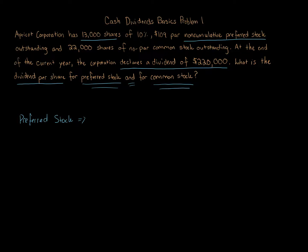We start with preferred stock. We calculate that. What we take is the par amount, $109. We multiply that by the percentage, the 10%. So $109 times 10%, that equals $10.90. We're then going to multiply the $10.90 per share by the number of preferred shares outstanding, which we're told is 13,000 shares. So we multiply by 13,000 shares. This equals $141,700.